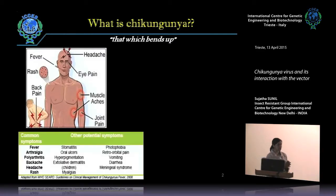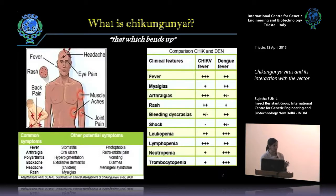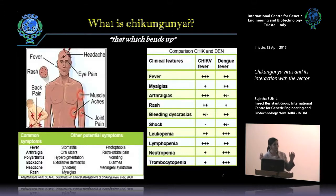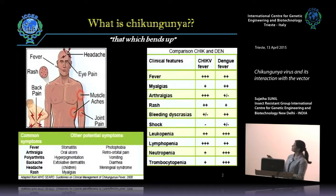Apart from the classical symptoms, there are also other associated symptoms. These associated symptoms are important because of the overlapping diagnostic features — the overlaying symptoms it can have along with a more popular disease called dengue, wherein most of the clinical features have overlapping symptoms with just a gradation difference.